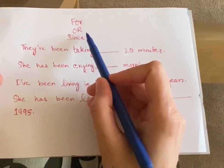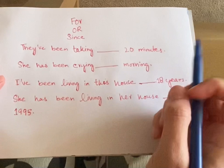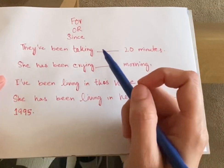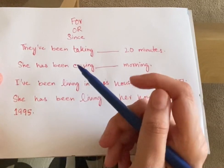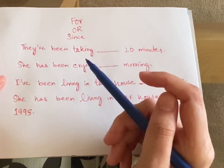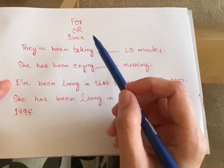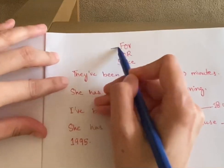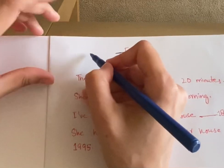For or since — which one to use? Let's find out. We use both 'for' and 'since' when we are talking about time, but there is a difference.